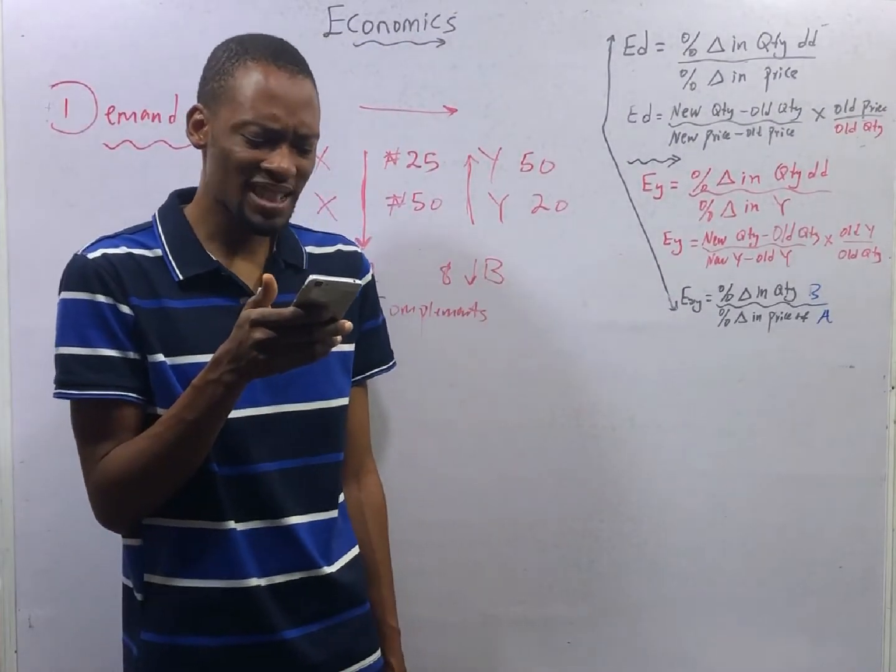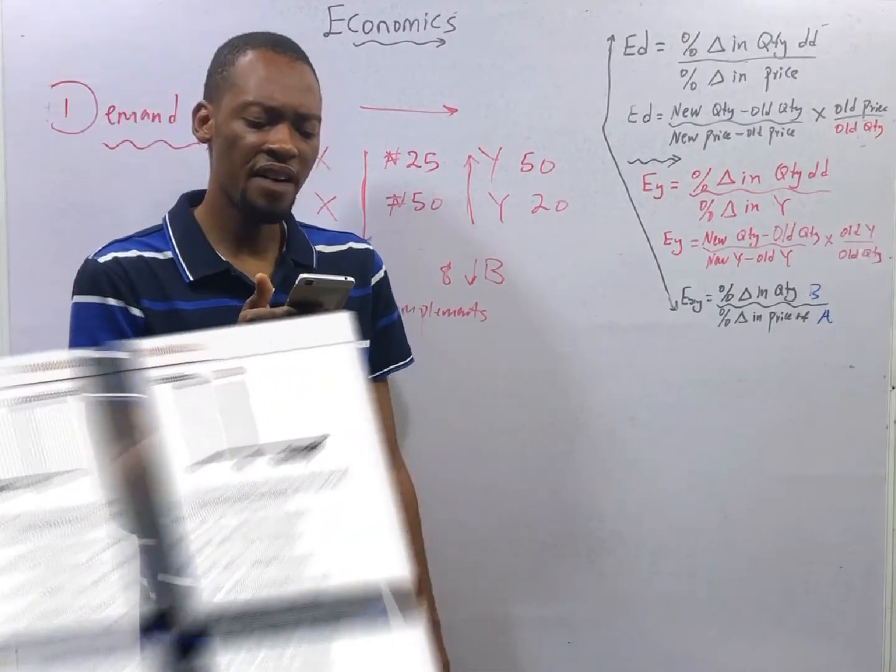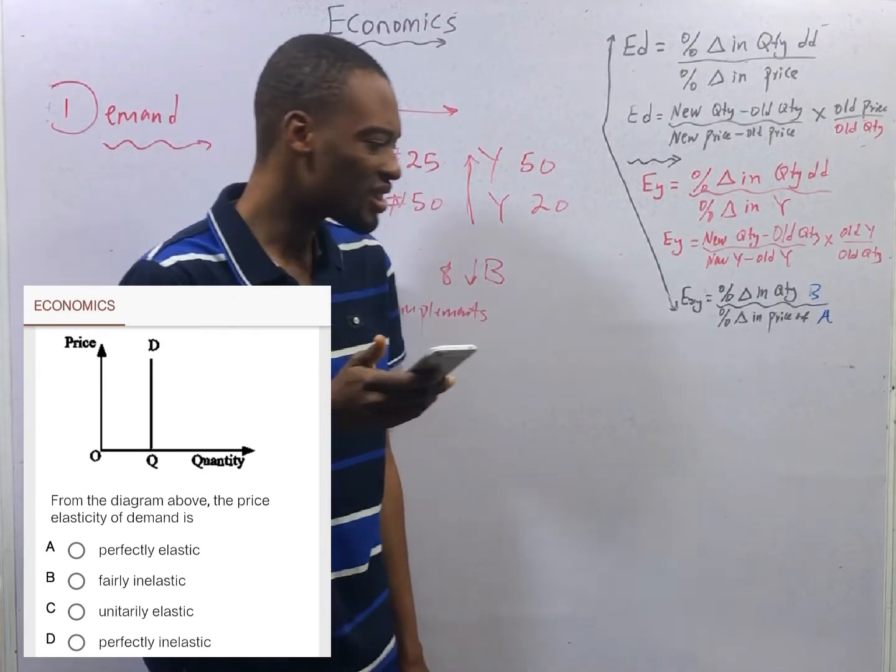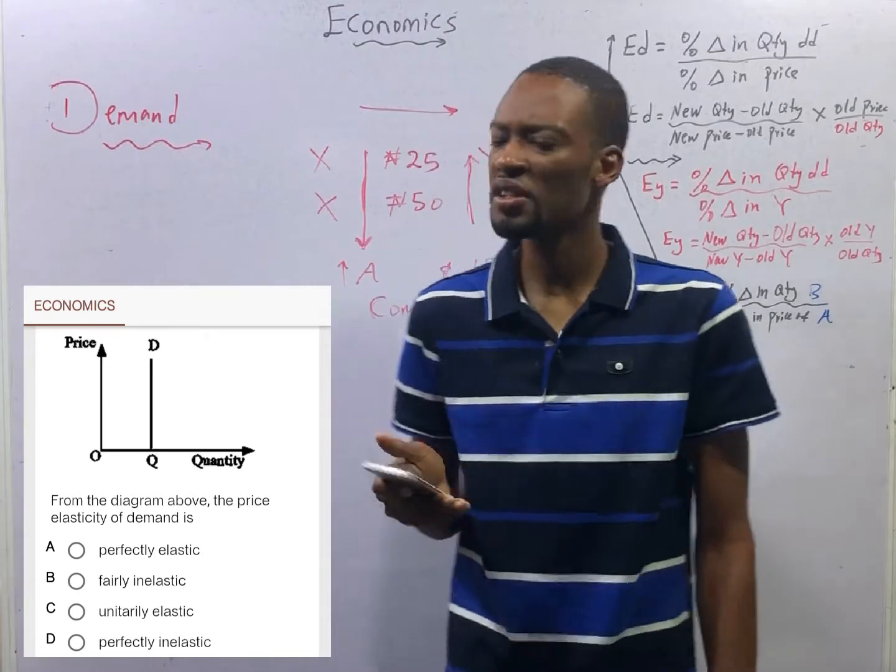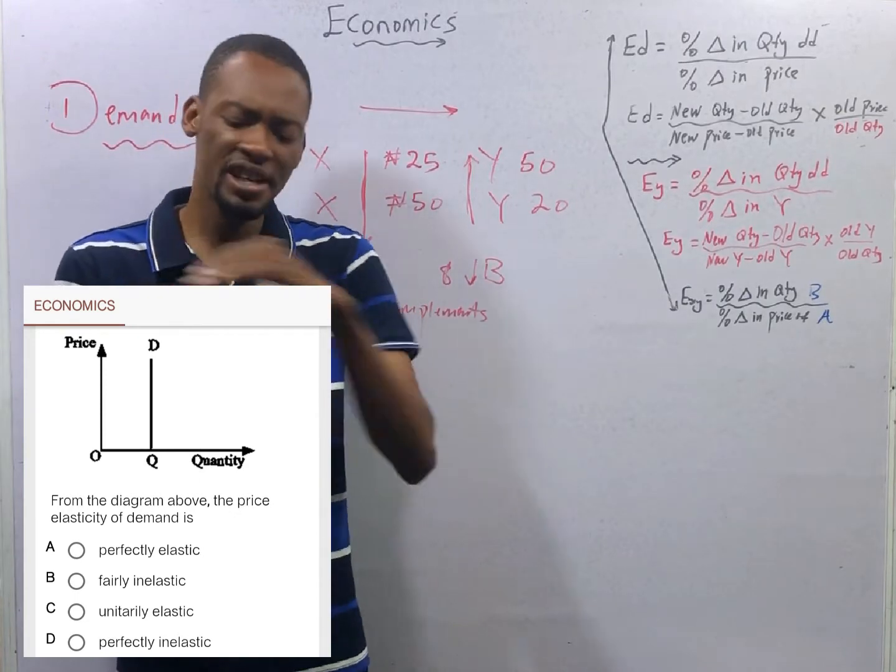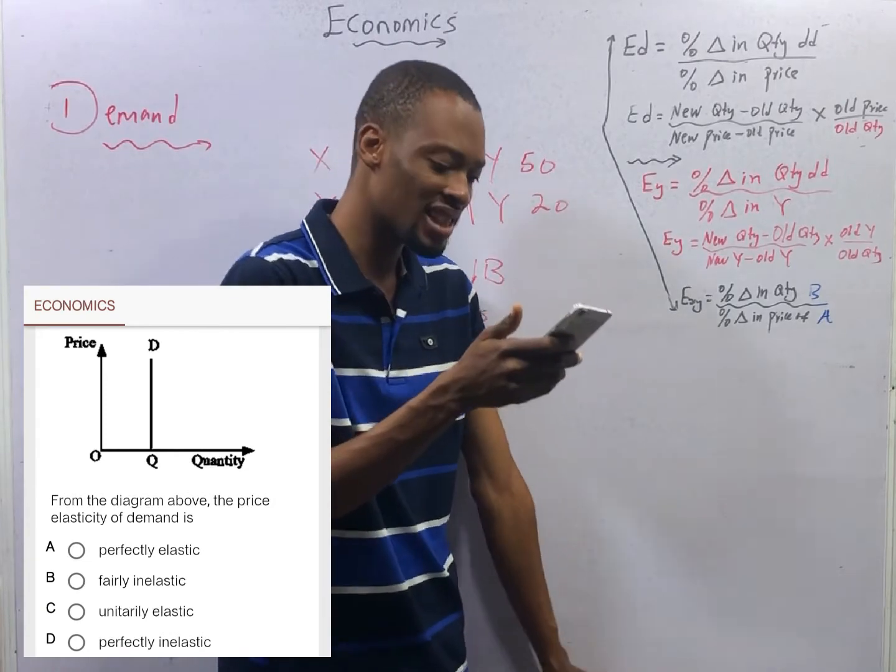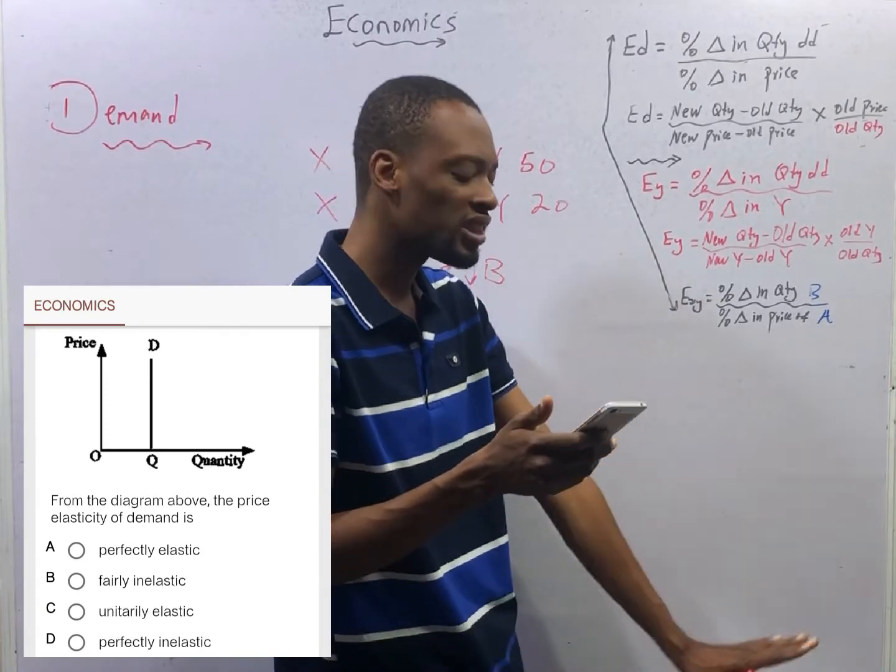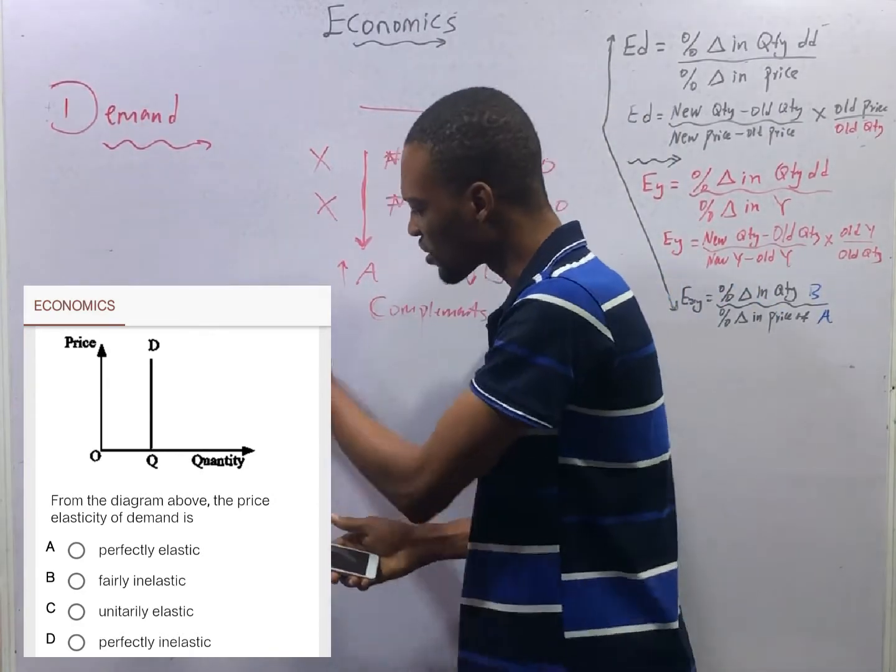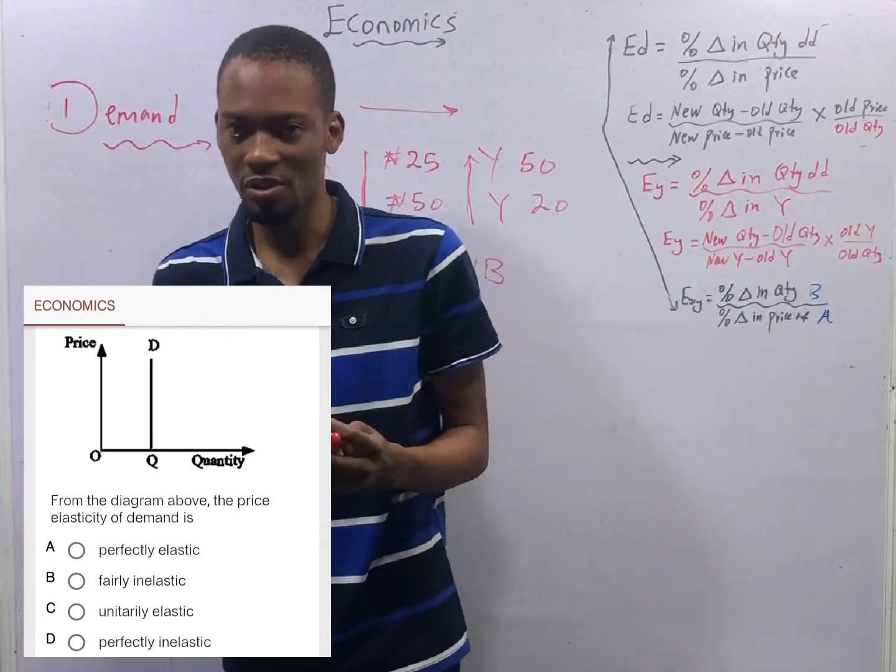From the diagram above, the price elasticity of demand is dash. As you can see, the graph of price to quantity is vertical. It is going up. What is happening? Price is not even affecting the quantity demanded. The quantity demanded is constant. So, a situation where price is not affecting the quantity demanded in any way, we say that it is zero elastic or perfectly inelastic. Zero elastic or perfectly inelastic. That is what the graph of the curve above shows. Price is, quantity is constant. Price is not even affecting the quantity. So, option D is so correct.